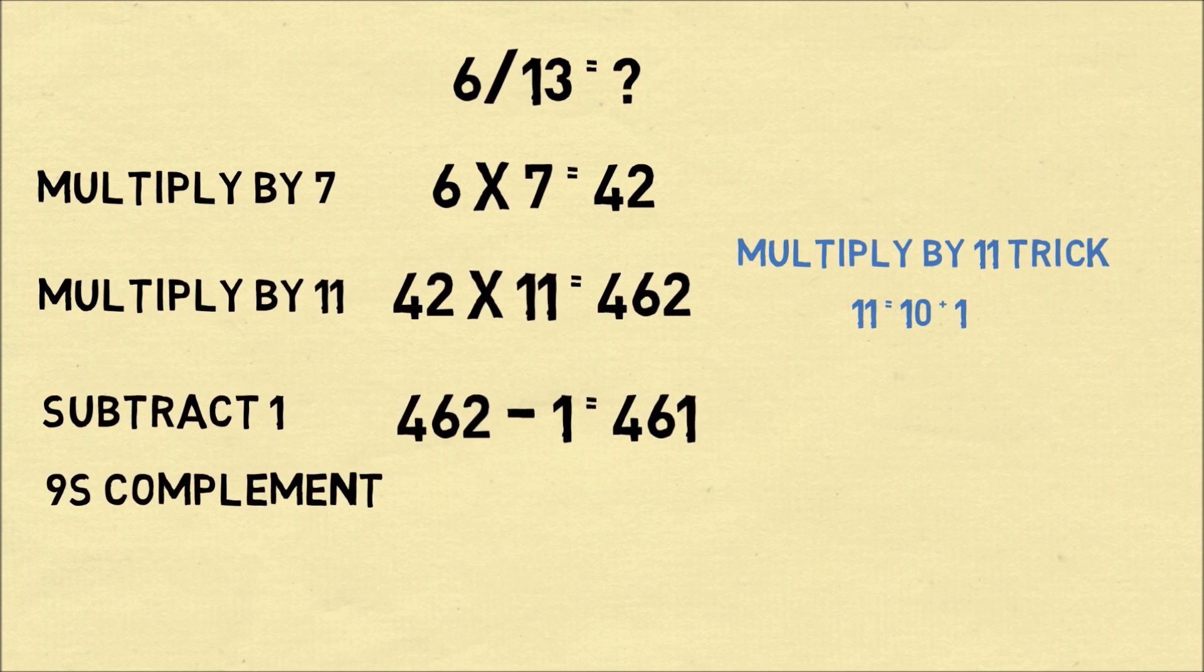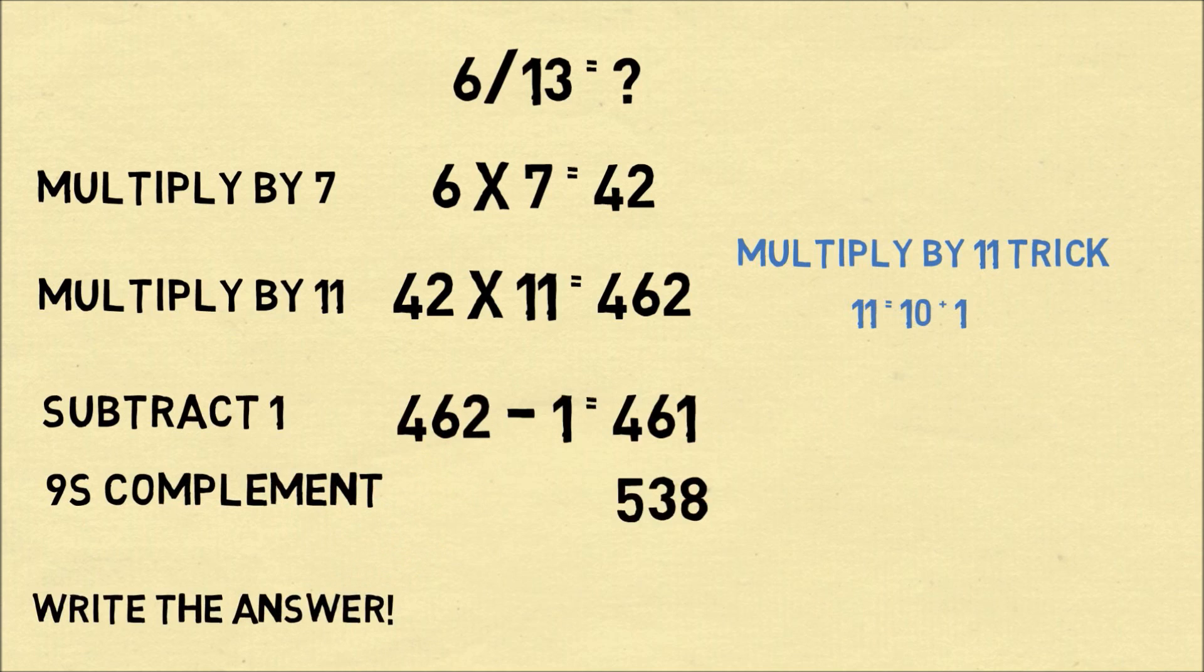The next step is to take the 9's complement of each digit. These are the numbers which make the other digit add up to 9. So 5 plus 4 is equal to 9, 3 plus 6 is equal to 9, and 8 plus 1 is equal to 9. And those are the next three digits in our answer.